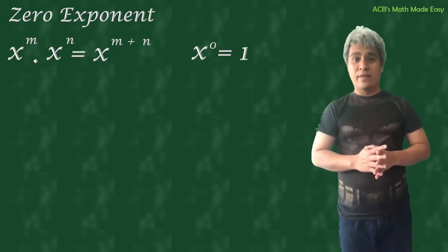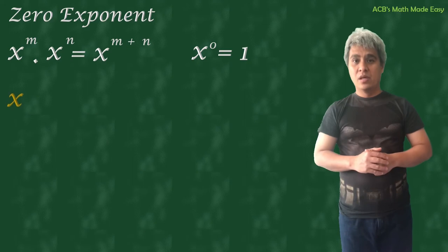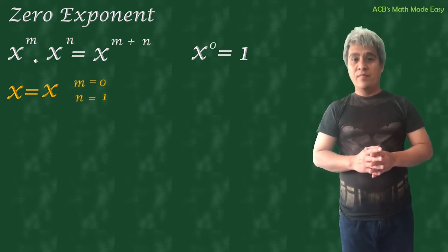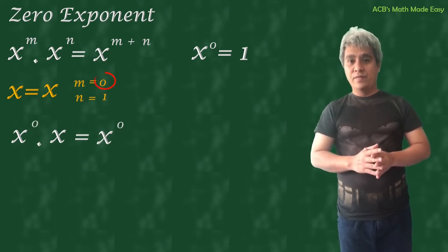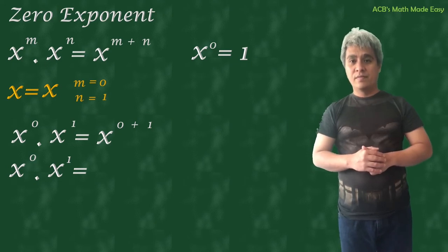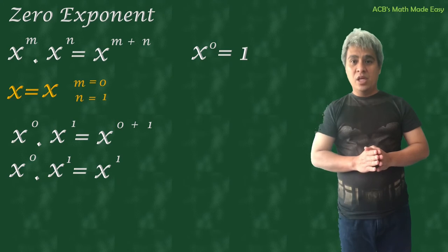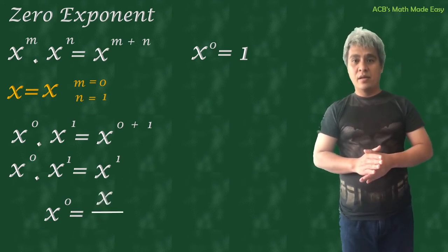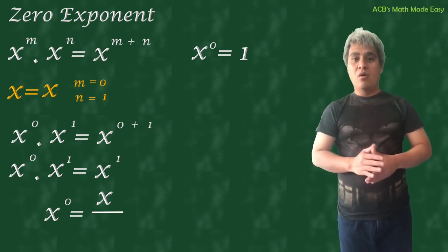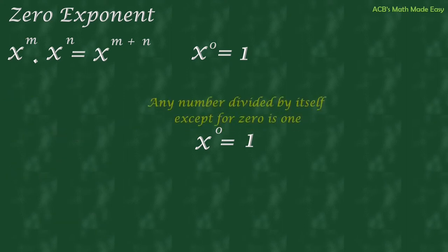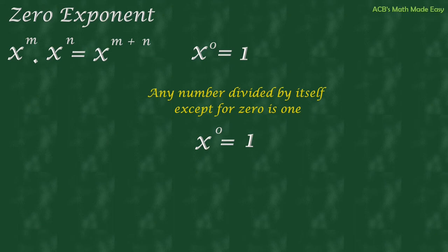Now we will prove that x raised to 0 is 1, provided the value of x is not 0. We put x for x, m as 0, and n as 1 in our formula. So x raised to 0 times x raised to 1 equals x raised to 0 plus 1, which equals x raised to 1. Cross-multiplying: x raised to 0 equals x raised to 1 over x raised to 1, which is x over x, and that equals 1. We have proven that x raised to 0 is 1, as long as x is not 0.